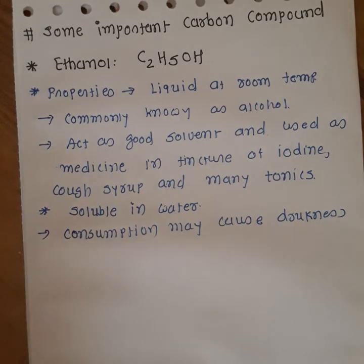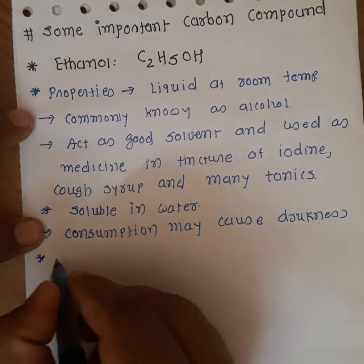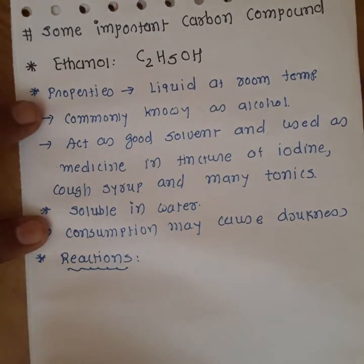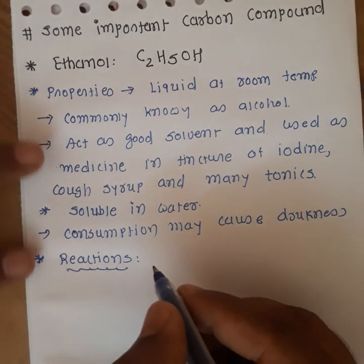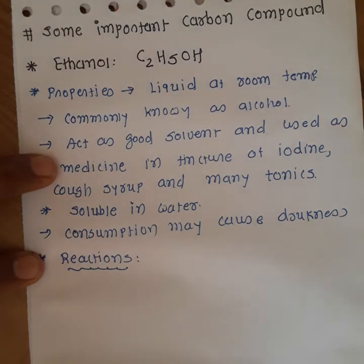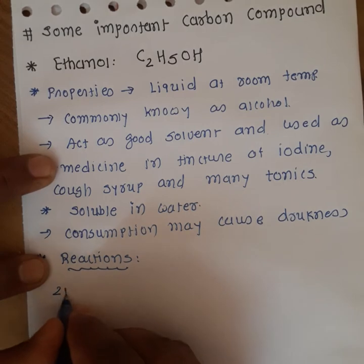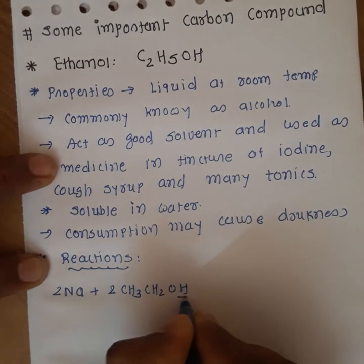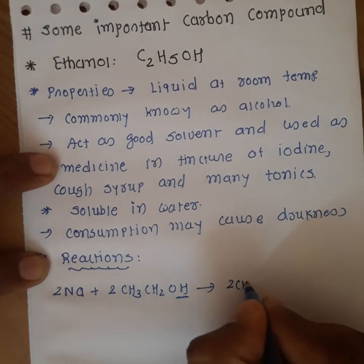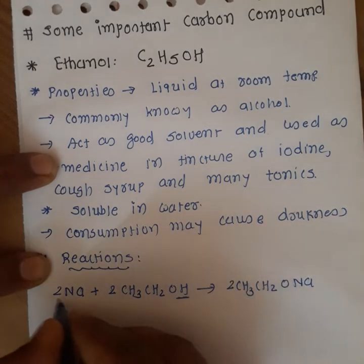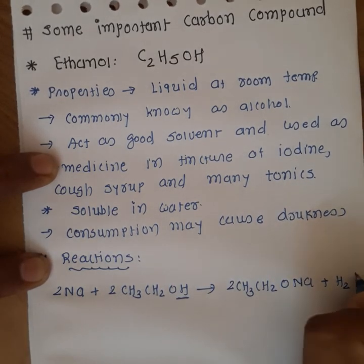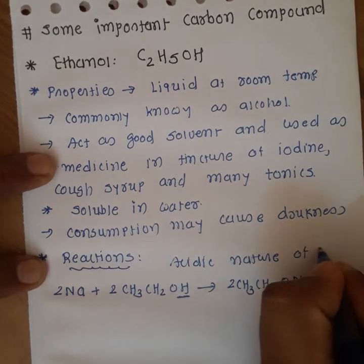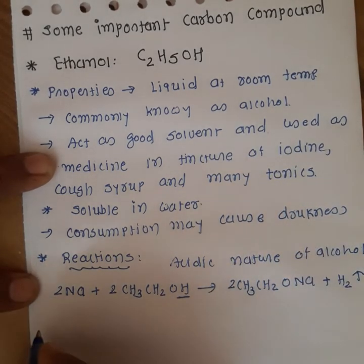Now, after the properties, let's look at the reactions of ethanol. Ethanol reacts with metals like sodium and releases hydrogen gas. When sodium metal is placed in ethanol, hydrogen gas gets released and ethanol gets converted into CH₃CH₂ONa, which is sodium ethoxide. This represents the acidic nature of alcohol — it releases hydrogen gas with metal.